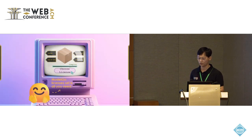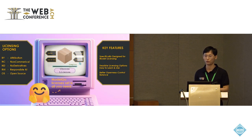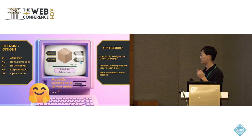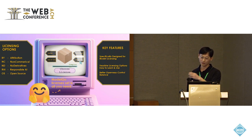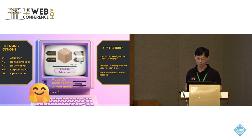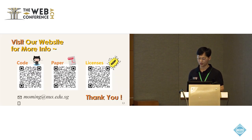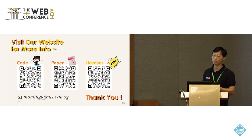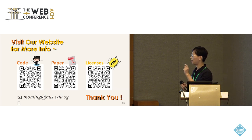So we wrote a new model license. Similar to Creative Commons, we offer five options to publish your model: attribution, no commercial, no derivatives, responsible AI, and open source. By combining these licensing options, you can publish your model with the combination that suits you. Here is our code, and you can download our license from the website. We are currently working with our law firm to improve our license.